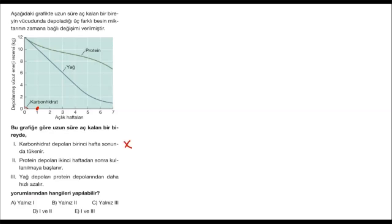İki: protein depoları ikinci haftadan sonra kullanılmaya başlanır. İkinci hafta ve proteini bulduk. Gördüğünüz gibi ikinci haftadan önce de protein depolarında bir azalma meydana gelmiş. O zaman bu ifade yanlıştır. Üç: yağ depoları protein depolarından daha hızlı azalır. Başlangıç kilogramları hemen hemen aynı; proteinler şöyle azalırken yağlar böyle azalmış. Bu doğru bir ifadedir. Cevabımız yalnız üç, yani C seçeneğidir.